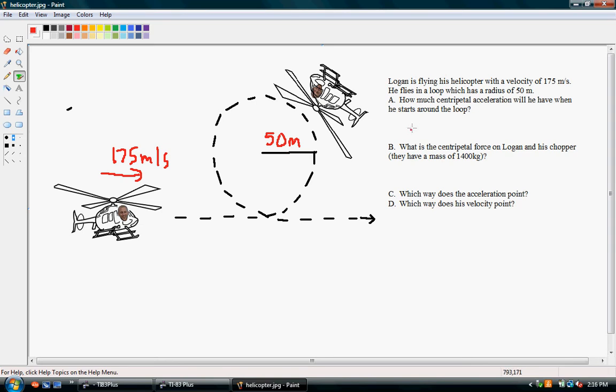Now, we have an equation for centripetal acceleration. It is the acceleration, centripetal acceleration, equals velocity squared over the radius. So, our velocity is 175, and we're going to square that, and then divide by the radius, which is 50.